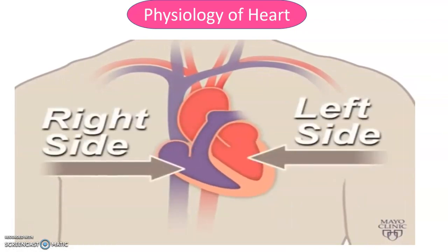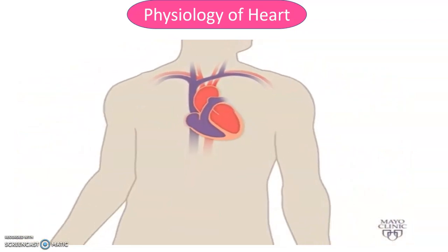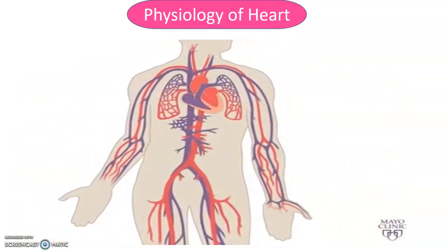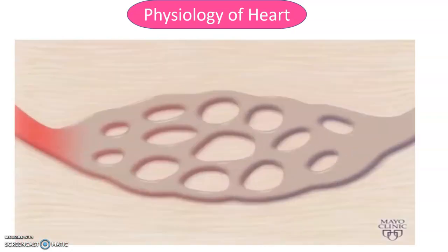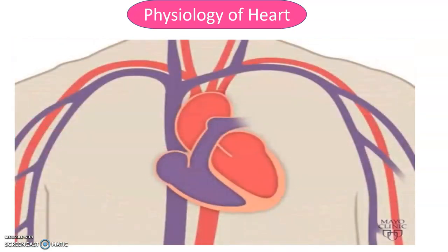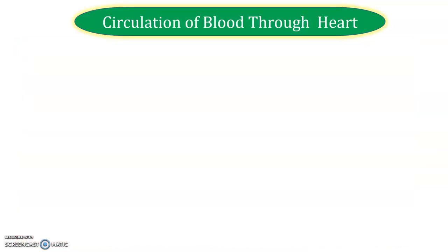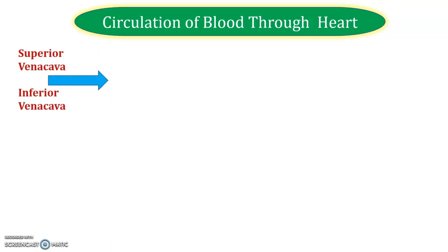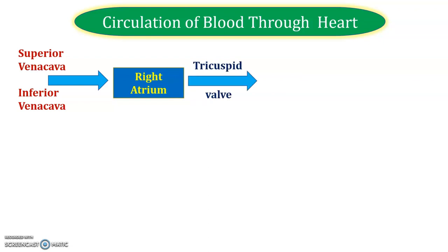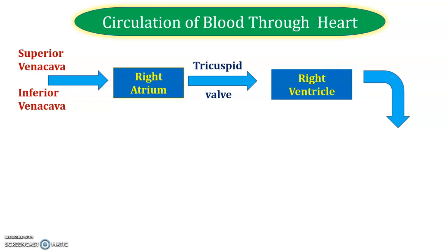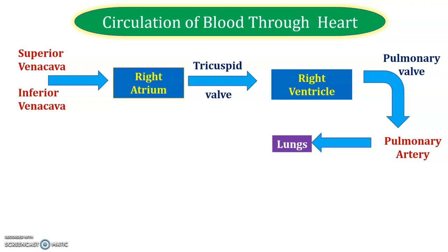The diagram shows the anatomy and physiology of the heart — the flow of blood on the right side and left side. The superior and inferior vena cava carry blood towards the right atrium. From the right atrium, blood passes via the tricuspid valve into the right ventricle. From the right ventricle, blood passes via the pulmonary valve into the pulmonary arteries and then to the lungs. This is the first pathway — the right side or deoxygenated blood pathway.